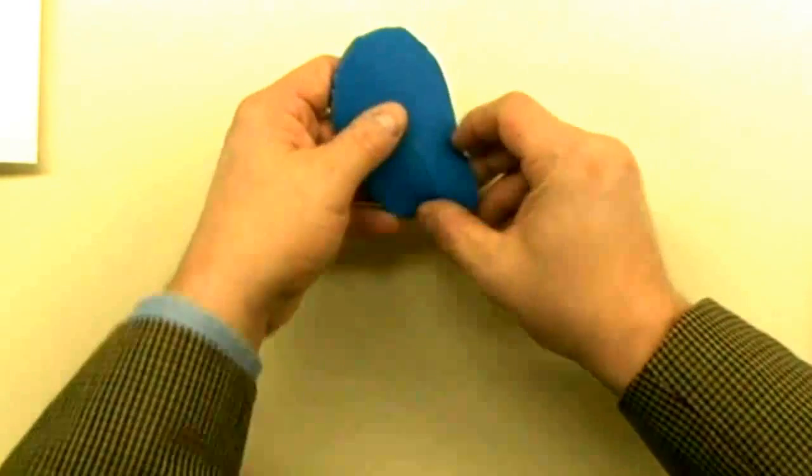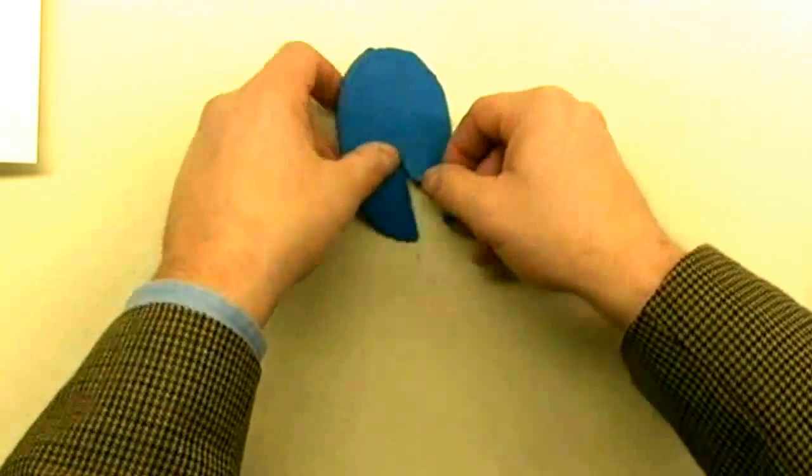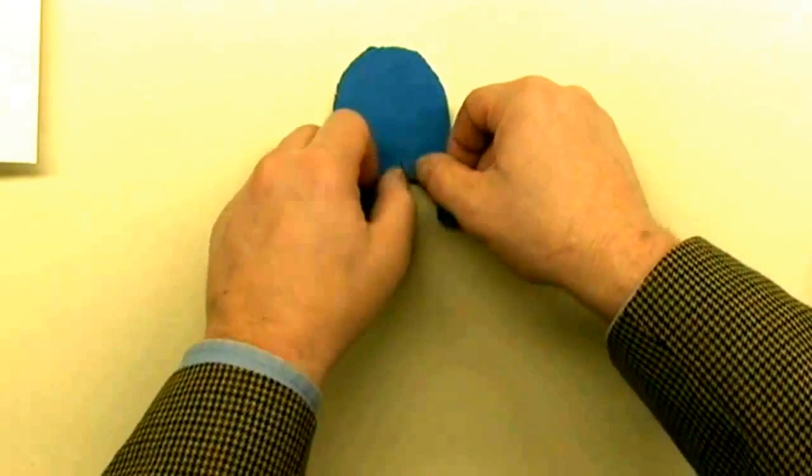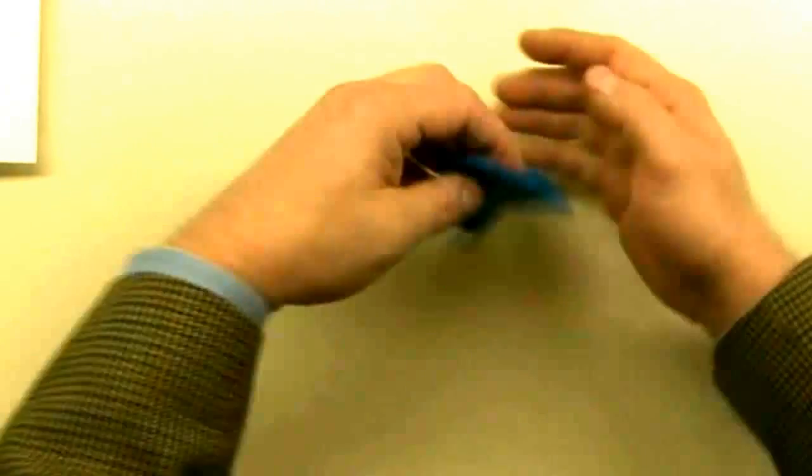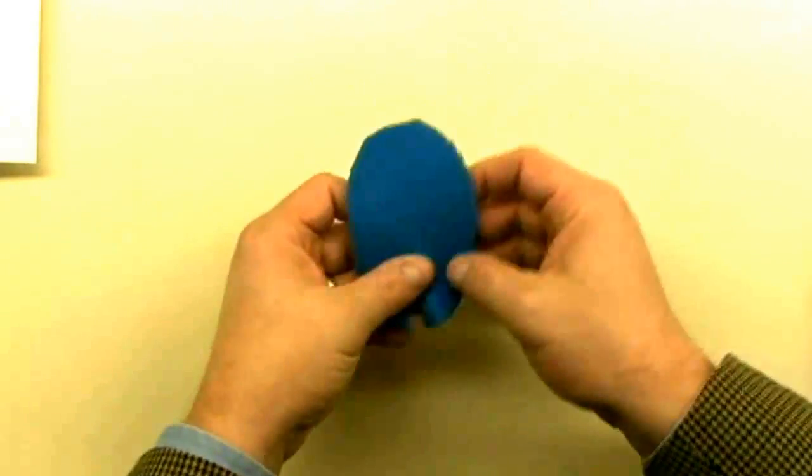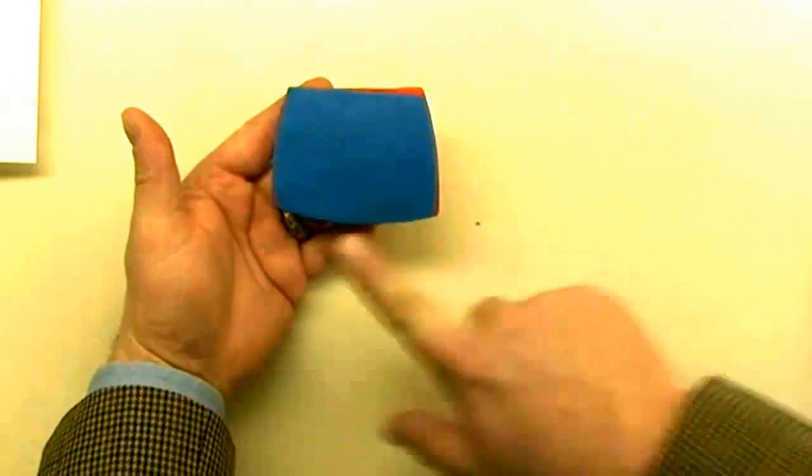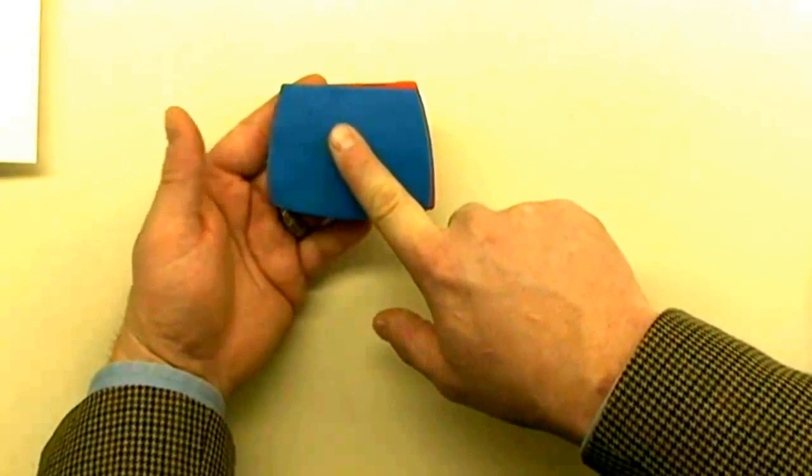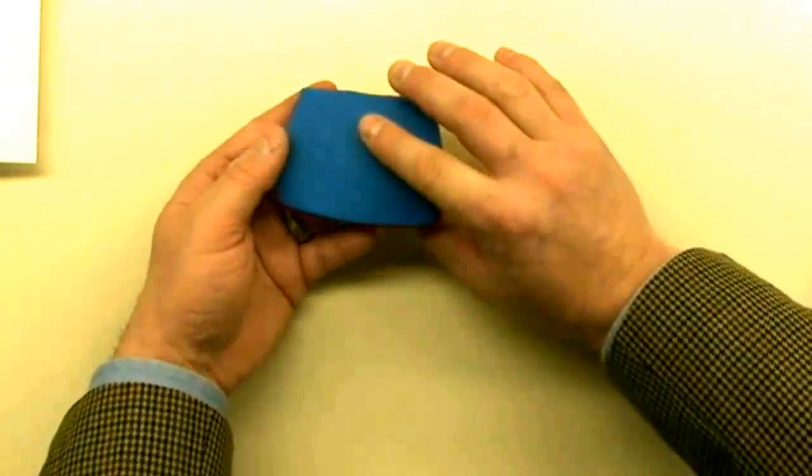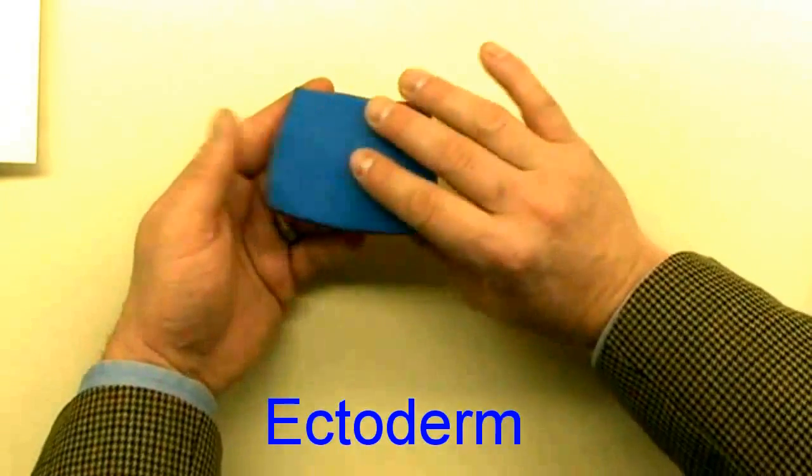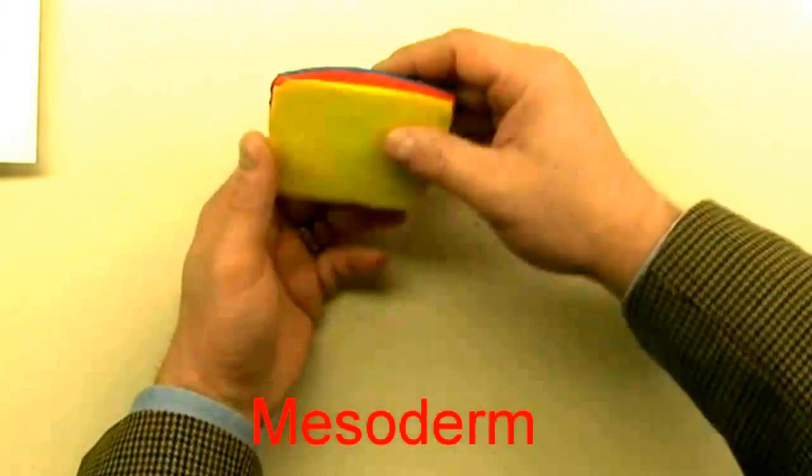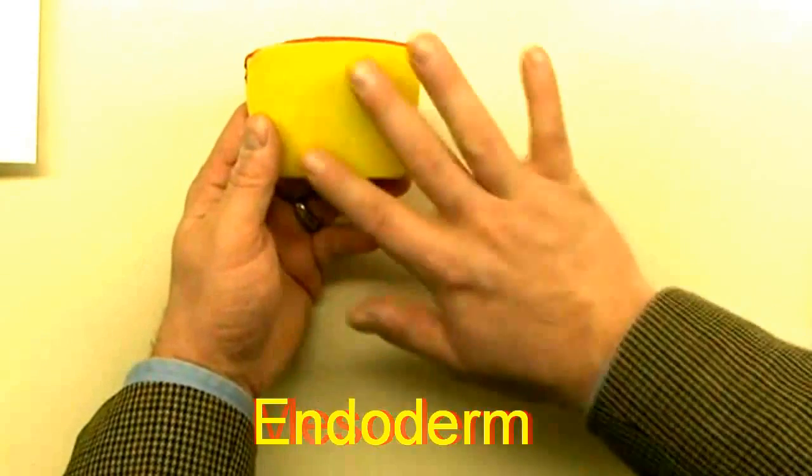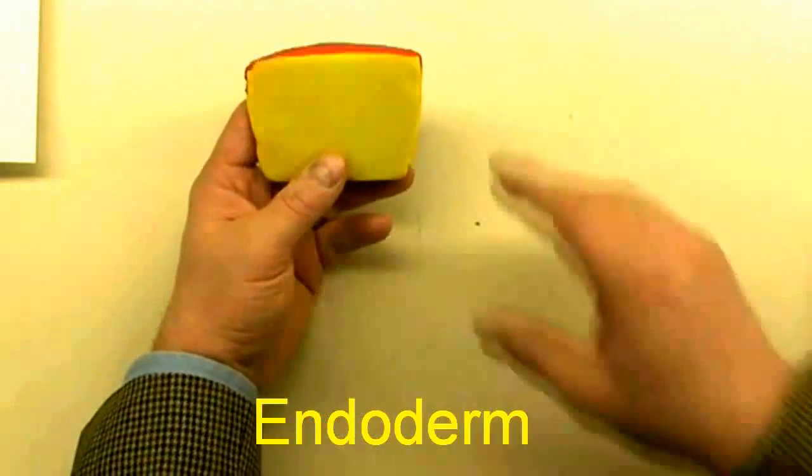As they roll under, they form two new layers called the endoderm and mesoderm. As this completes, we're left with the epiblast cell layer on top, now magically referred to as ectoderm. In red, we have the mesoderm. In yellow, we have the endoderm. Endoderm is not the same as hypoblast.